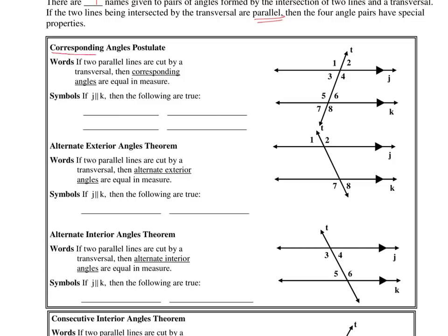Corresponding angles is the first type we'll work with. If two parallel lines are cut by a transversal, then corresponding angles are equal in measure. You'll focus on two areas — the angles formed at each intersection point. Corresponding angles share the same position in each group: one and five, two and six, three and seven, and four and eight are corresponding pairs.